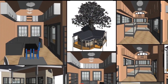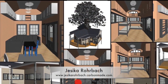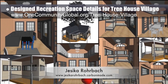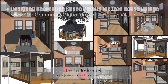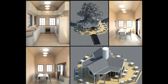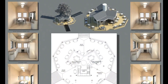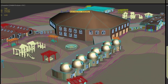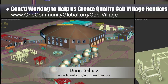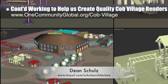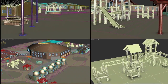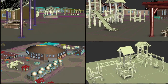Working on the Treehouse Village Pod 7, Jessica Warbach, architectural drafter, designer, and 3D modeler, completed internal and external layouts for the hostel treehouse and additional details in the library, then created renders of her work and a presentation proposal. Dean Schulz, architectural designer, further developed what's necessary to create quality Cobb Village Pod 3 renders — update 14 of this work included designing a representation of the natural and do-it-yourself constructed playground equipment.